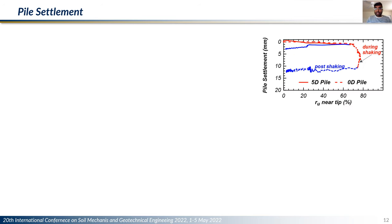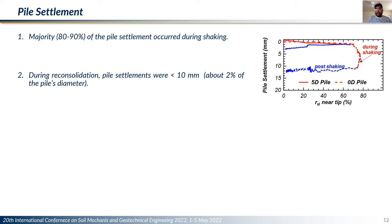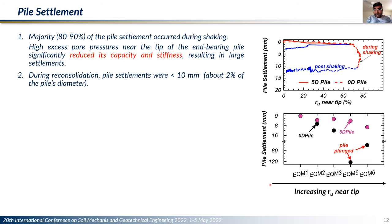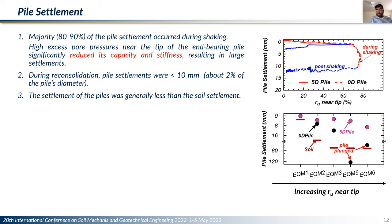Looking at pile settlement throughout a shaking event as a function of excess pore pressure ratio at the tip, the majority of pile settlement occurs during shaking when the excess pore pressure is high, whereas post-shaking pile settlement is very small. Across multiple shaking events, as the excess pore pressure ratio at the tip increases, pile settlement increases, and when the excess pore pressure ratio becomes very high, the piles can even plunge into the soil. Plotting the soil settlement on the same graph, the soil settlement is generally higher than the pile settlement, indicating that the relative settlement of soil and pile may be an important design criterion rather than only the absolute settlement of the pile.